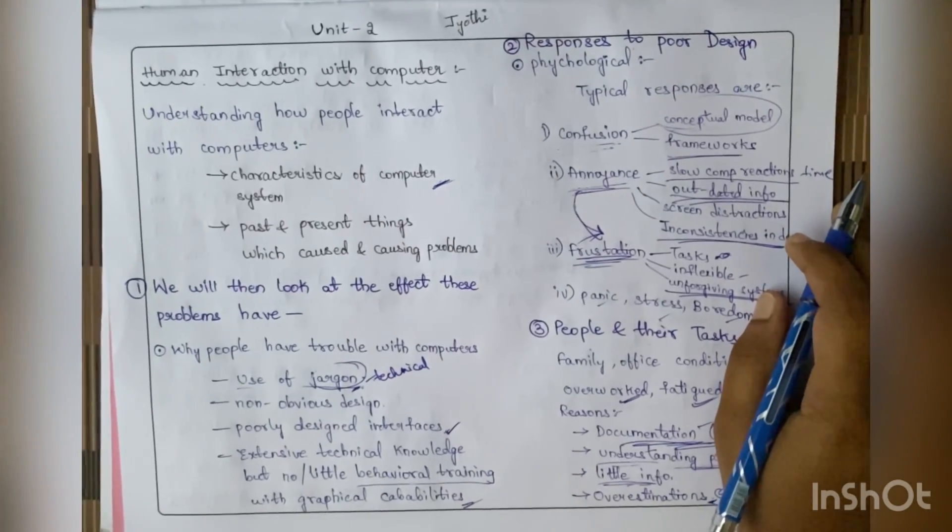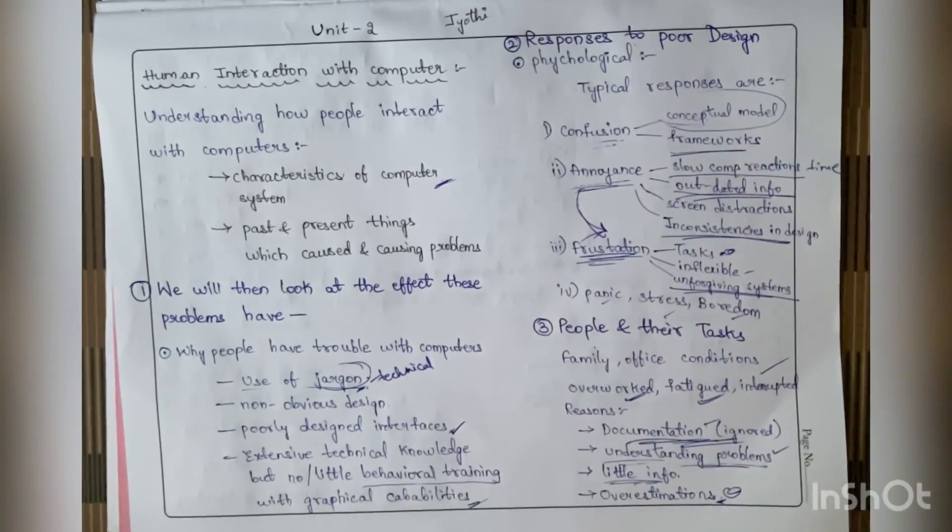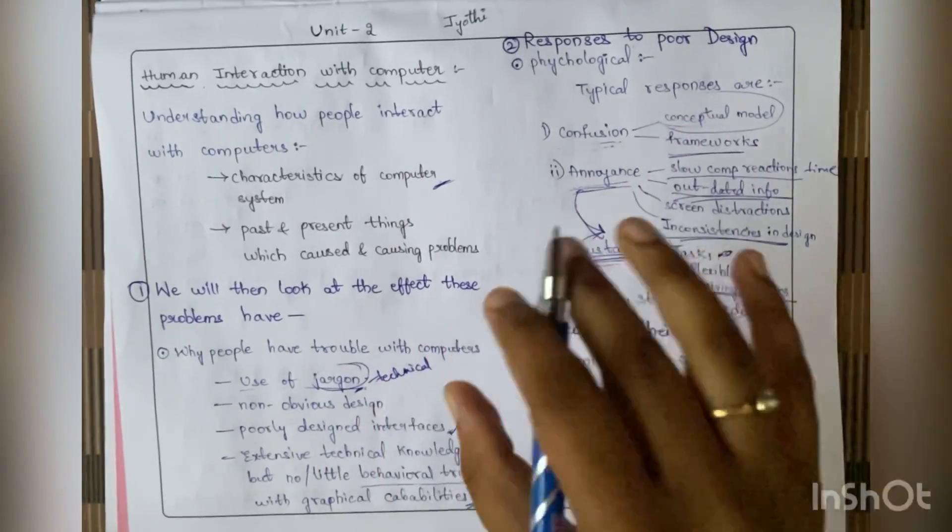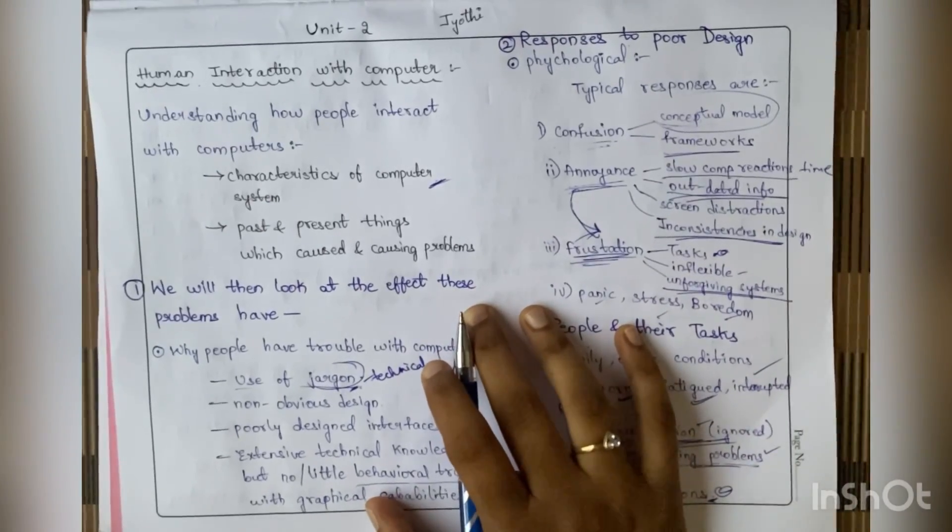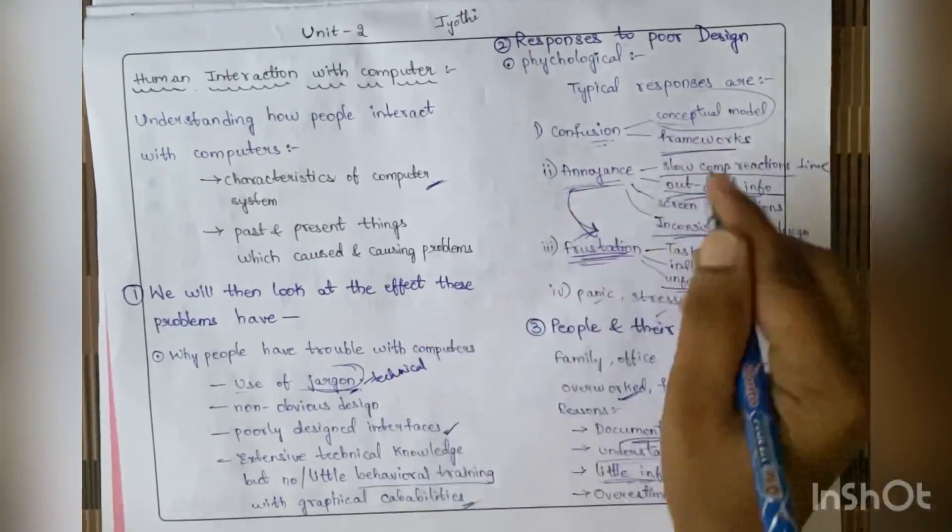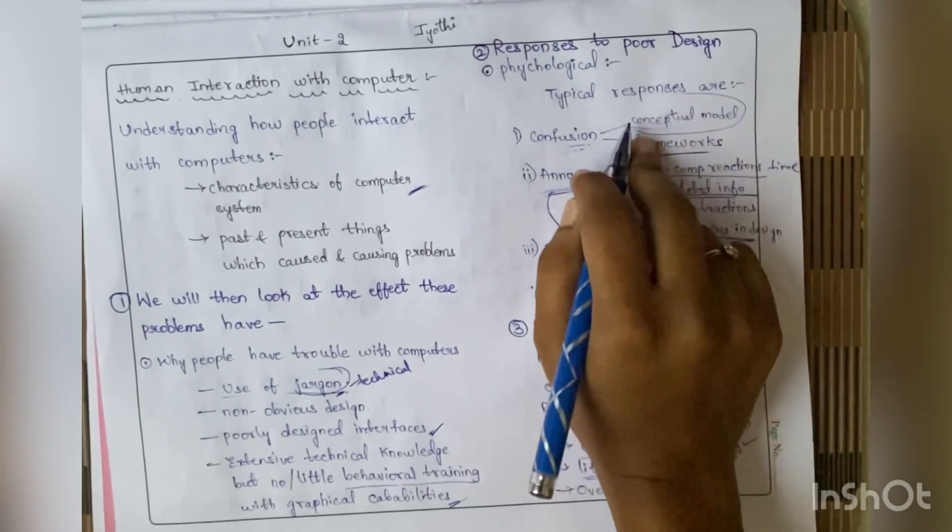What are the reasons for this frustration and confusion? People said there is difficulty in understanding the conceptual model of the interface. Because of poor design, they are unable to understand the model - how it is working, how to use it, and all the features. If they are unable to understand the frameworks, it's very difficult for them. These two reasons are related to confusion.